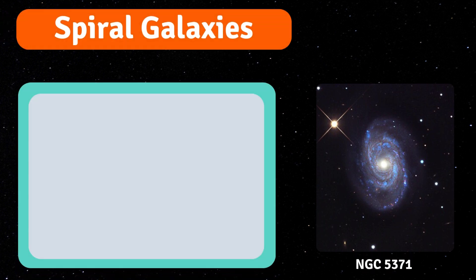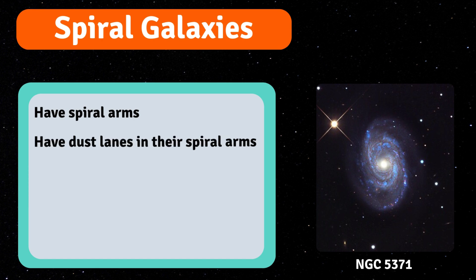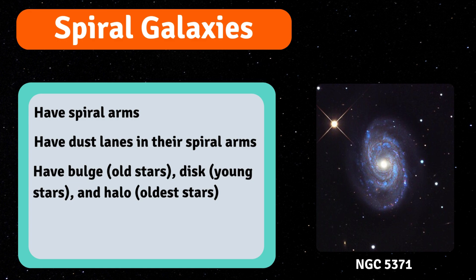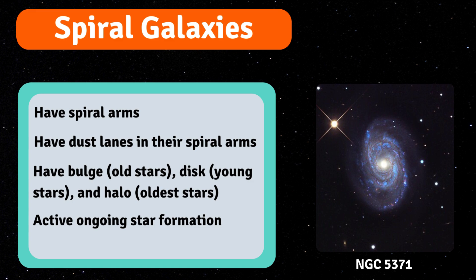Spiral galaxies have bright centres with arms that spiral outwards. These arms contain lanes of dust and gas. Spiral galaxies have three main features: the bulge in the centre, which is made of older stars; the disk, where young stars and dust are found; and the halo, which contains some of the oldest stars in the galaxy. Spiral galaxies are very active in forming new stars and make up almost all of the other half of the galaxy population. Our own galaxy, the Milky Way, is a spiral galaxy.